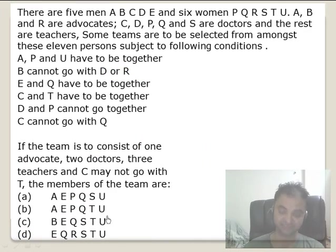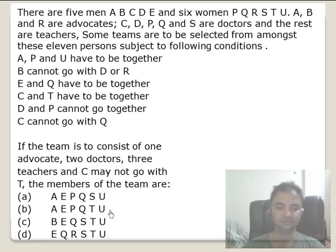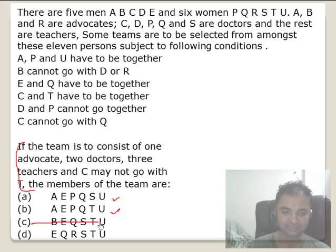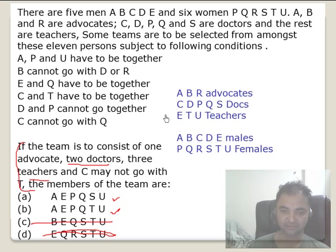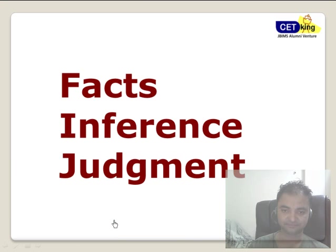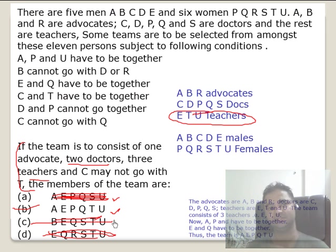Third question — pause and use the strategy. Again: A, P, U must be together. Checking options: APU here, APU here, BTU here — one is gone. Two options down. Now: the team must have two doctors and three teachers. The teachers E, T, U must all be there. ETU is present in one option but not the other — so the answer is B. Because all three teachers must be there, options A, C, and D are already out. Beautiful — you get the answer.